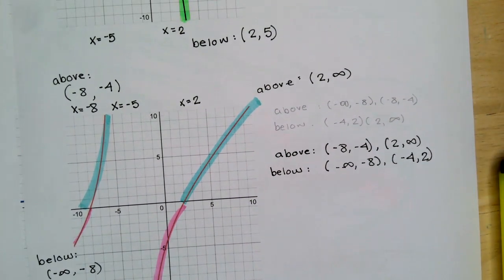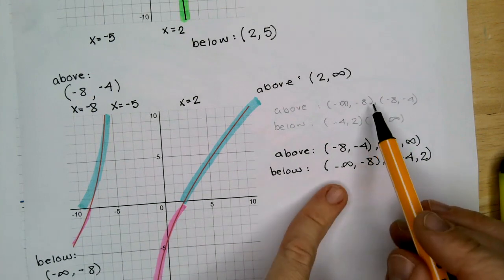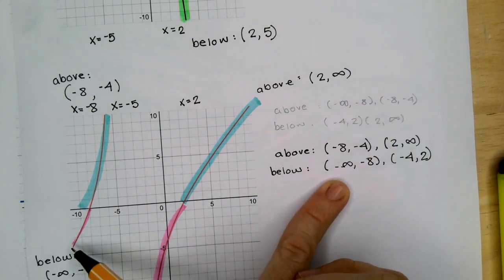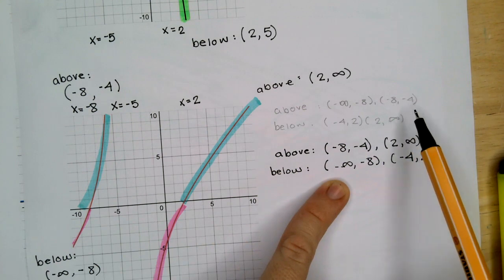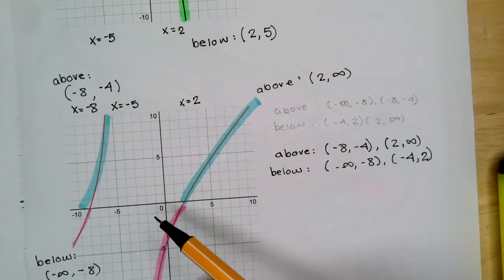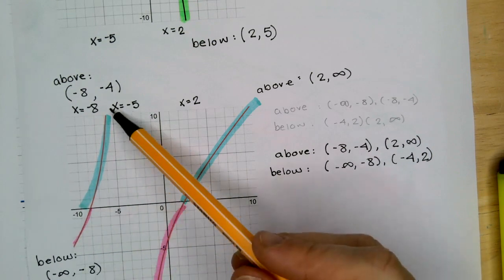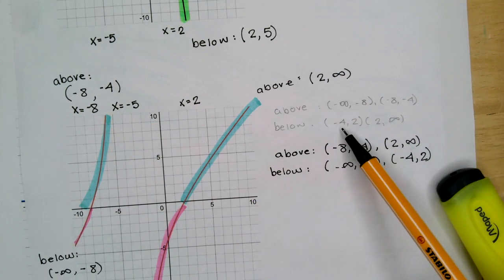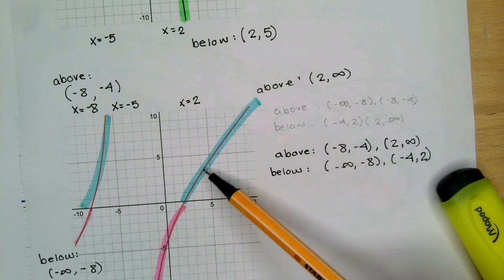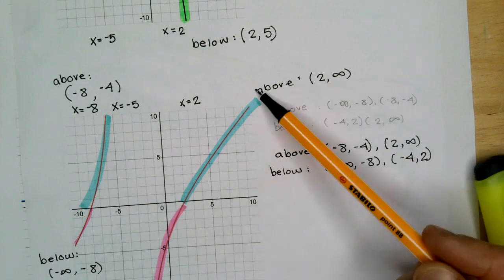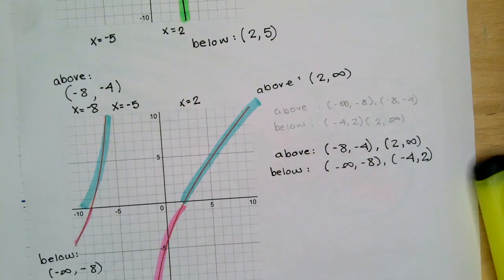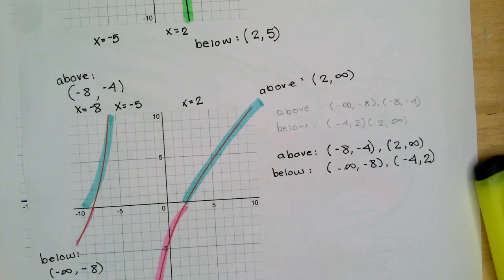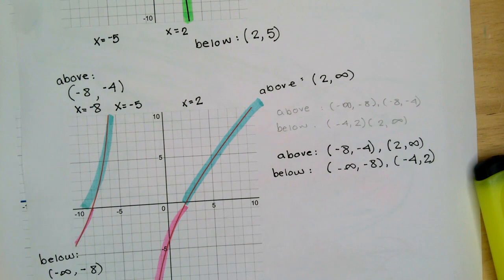Let's go over what you did. Negative eight to negative infinity above — it's actually below. Negative eight to negative four is above — correct. And then below you said negative four to positive two and two to infinity. So you kind of just did this whole arc as above and the other as below. We're just looking at the x-axis. I hope that helps. Email me if it didn't. I again apologize very much for how long that took me to get back to you.